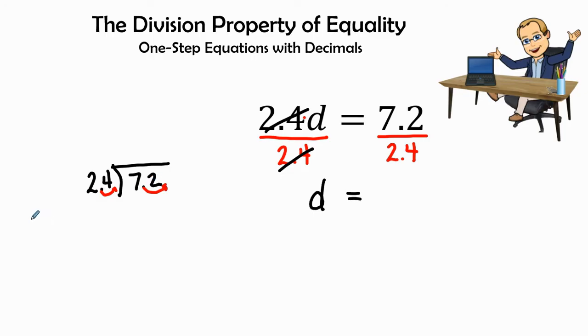Let's see multiples of 24. 24 goes to 48 plus 24 more times is 72. So 24 goes into 72 three times. So the correct answer in this equation would be d equals 3.